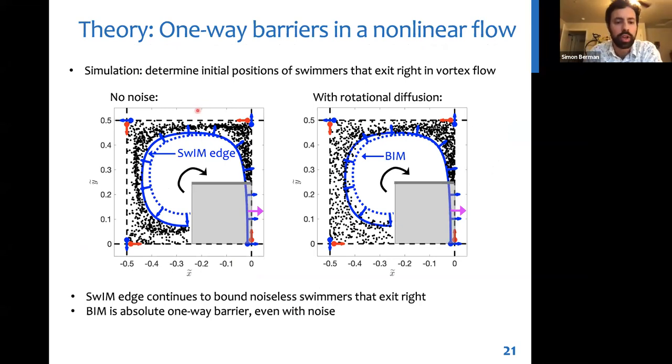And so we investigated this through a simulation where we took the vortex flow I showed at the beginning. Here I just show one clockwise cell. And we looked for swimmer trajectories that enter this gray box and exit right, similar to how we did in the experiment. Without noise, the black dots show initial positions of swimmers that have this kind of trajectory. And the blue curve is the numerically computed swim edge for the vortex flow. And we see that the edge really does bound the motion of these non-noisy deterministic swimmers. When we add noise, however, we do find trajectories which start on the other side of the swim edge and manage to exit right, but they're still bounded by the BIM for this flow, which is shown by this dotted line.